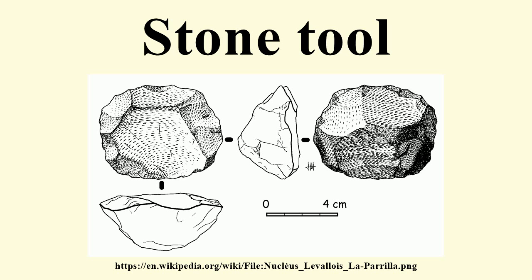Stone has been used to make a wide variety of different tools throughout history, including arrowheads, spearpoints and querns. Stone tools may be made of either ground stone or chipped stone, and a person who creates tools out of the latter is known as a flintnapper. Chipped stone tools are made from cryptocrystalline materials such as chert or flint, radiolarite, chalcedony, obsidian, basalt, and quartzite via a process known as lithic reduction. One simple form of reduction is to strike stone flakes from a nucleus of material using a hammerstone or similar hard hammer fabricator.